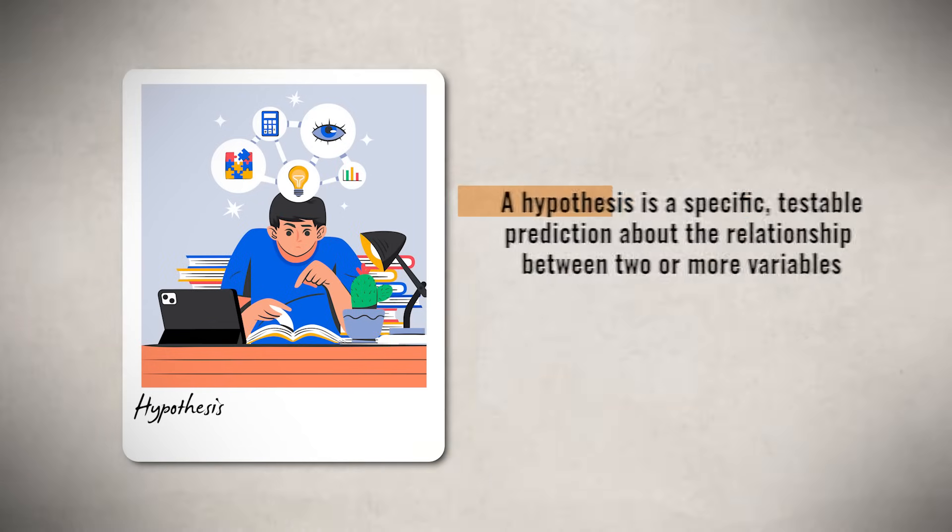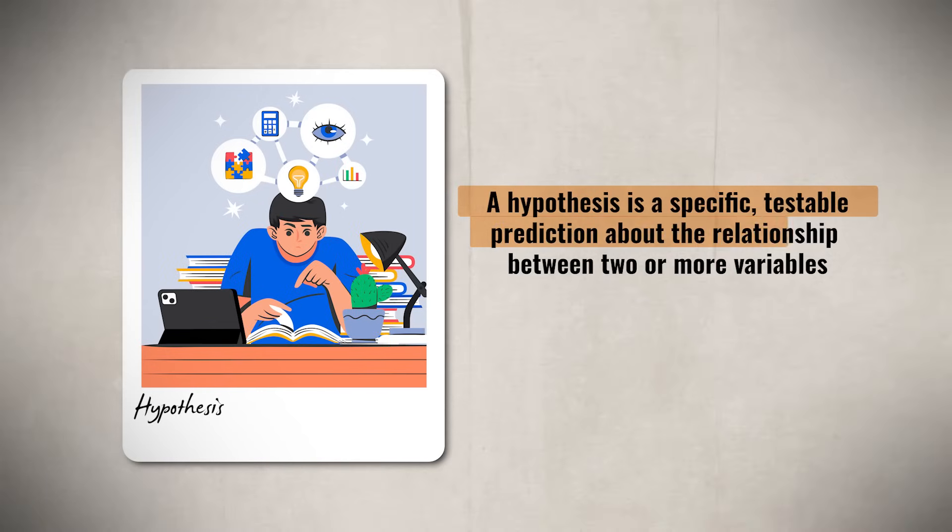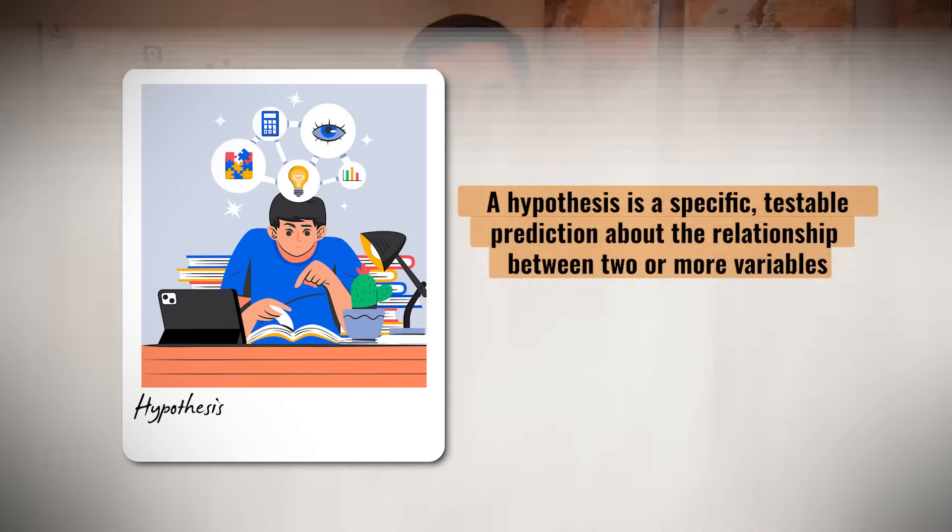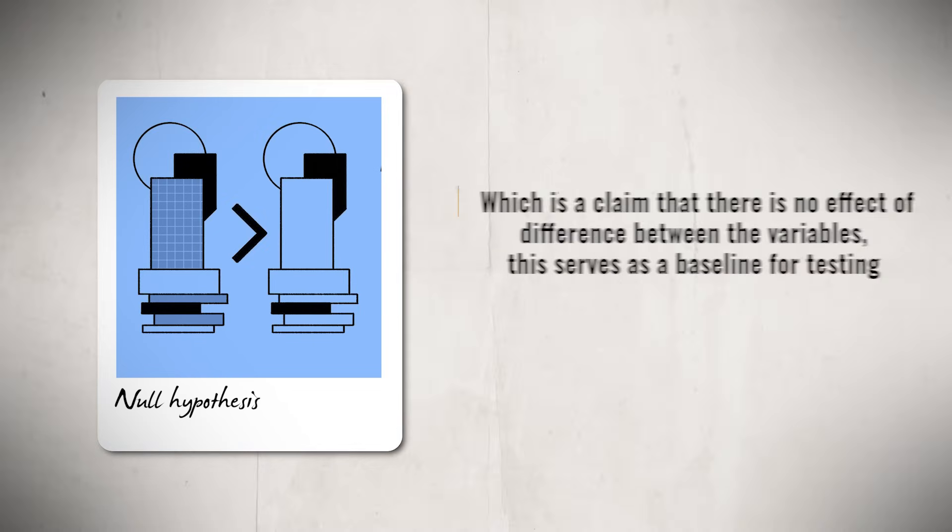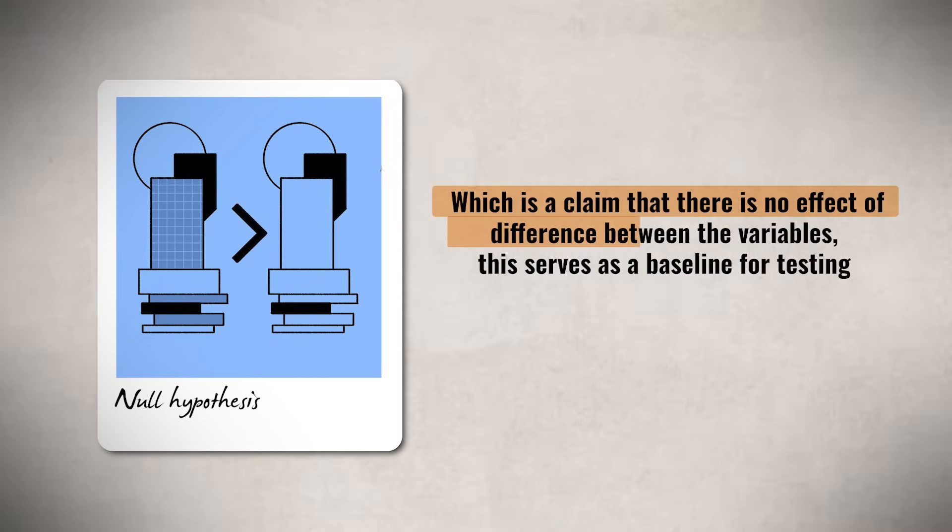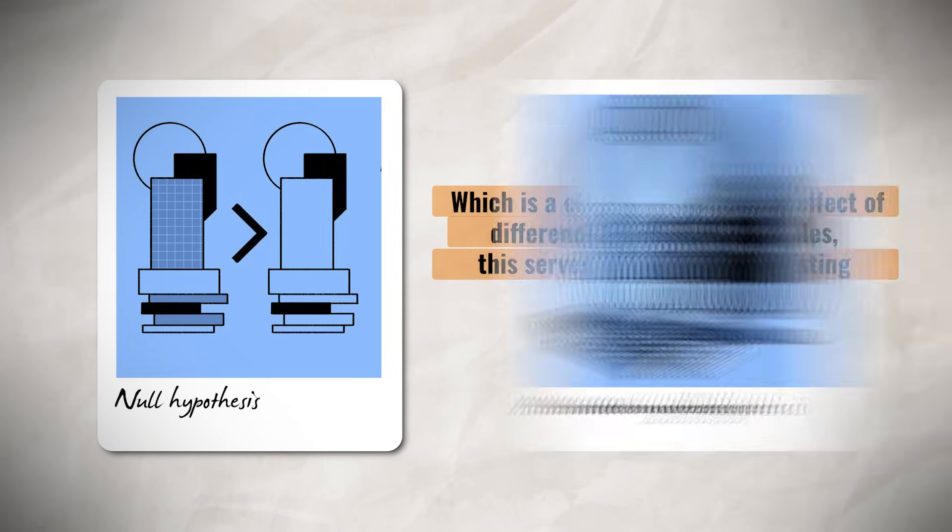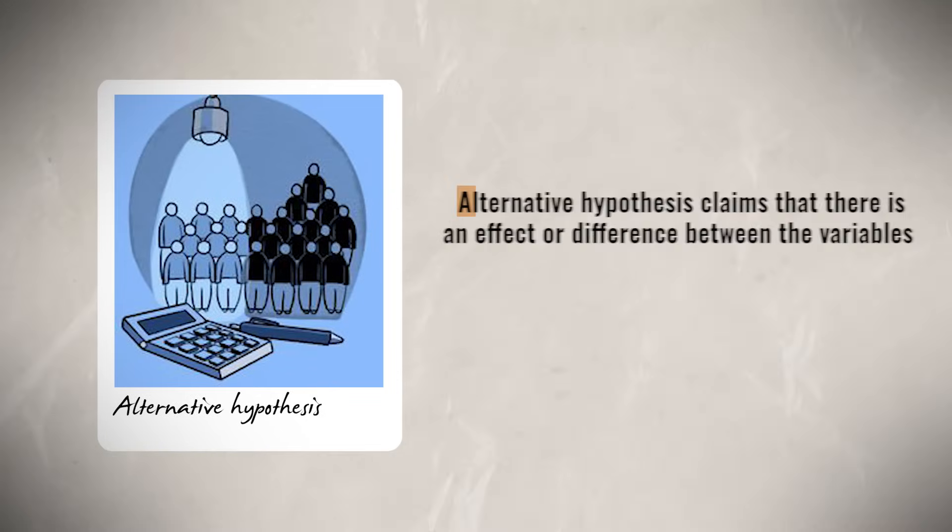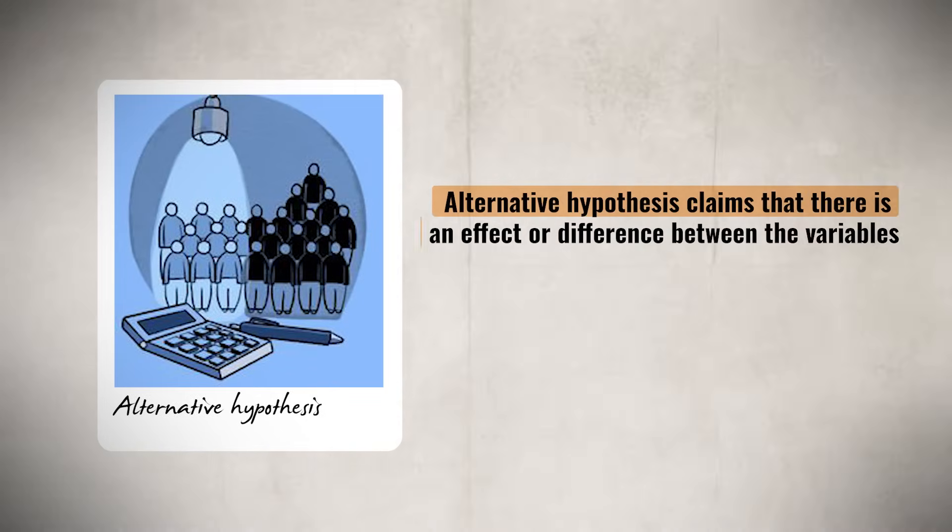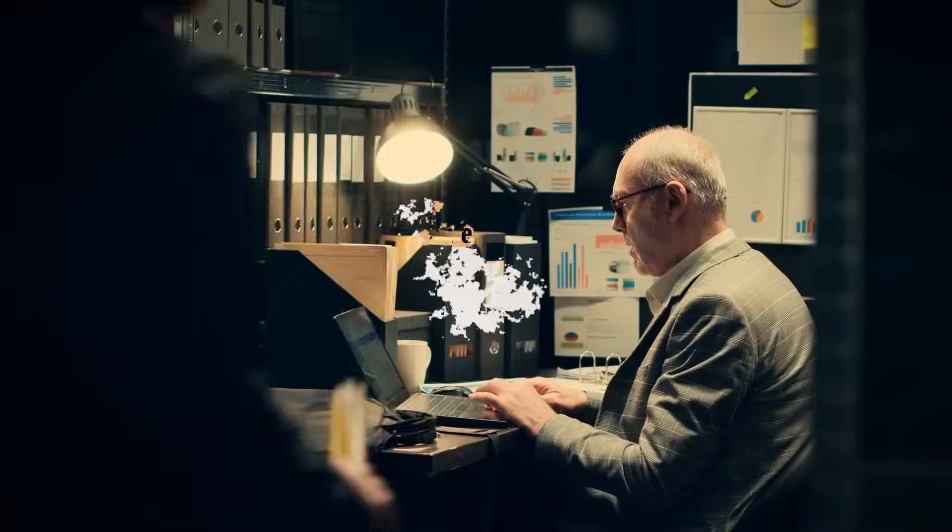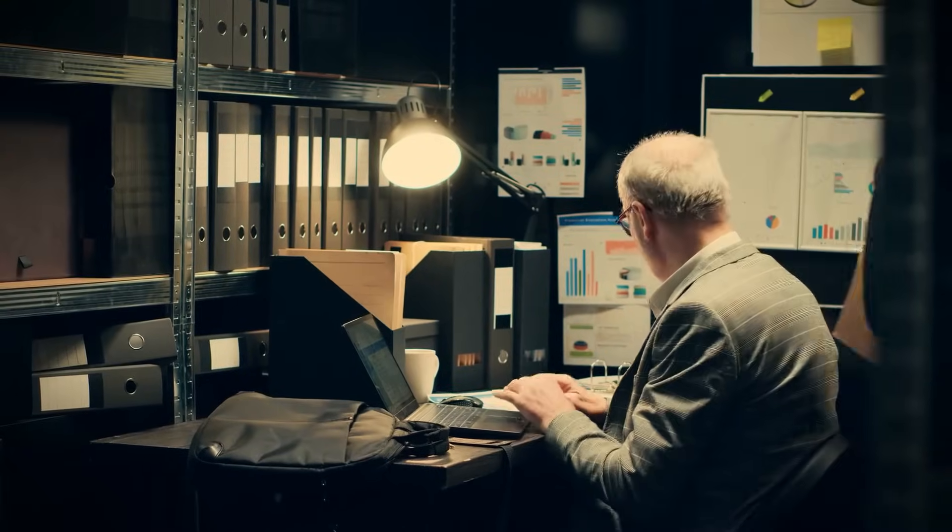Remember, a hypothesis is a specific prediction about the relationship between variables. Since I mentioned a hypothesis, I want to point out that there's two different types you'll want to be familiar with when looking at data. The first is the null hypothesis, which is a claim that there is no effect or difference between the variables. This often serves as the baseline for testing. The second is the alternative hypothesis, which claims that there is an effect or difference between the variables. This is often what the study or researcher is seeking to show.